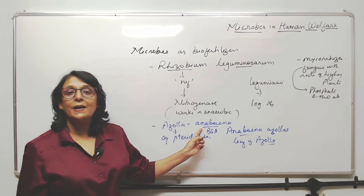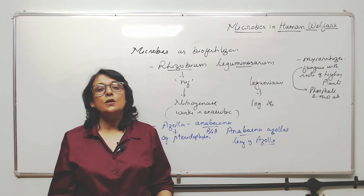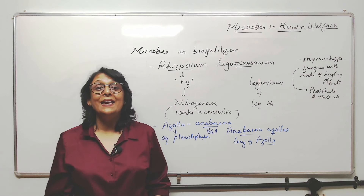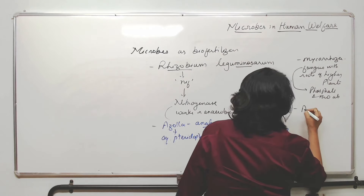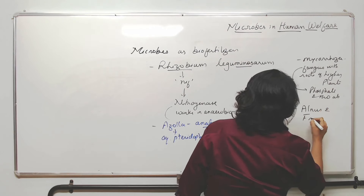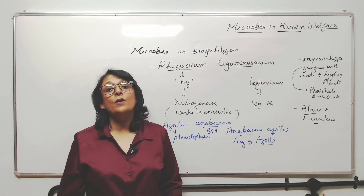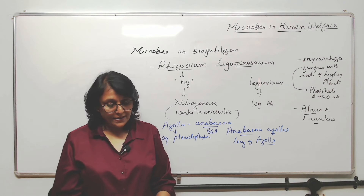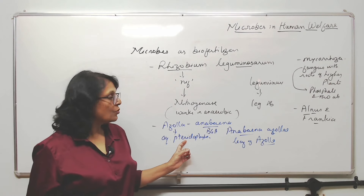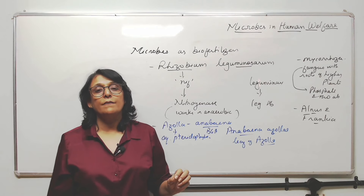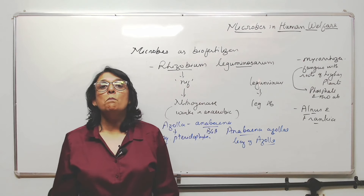Azospirillum and azotobacter are free-living nitrogen fixers, while rhizobium is symbiotic. If you add these microbes into the soil, the nitrogen and mineral content of the soil will increase. There is also Frankia and Alnus — a symbiotic association in the root nodules of Alnus — along with Anabaena azollae, which are common microbes that help increase soil fertility and can be used as biofertilizers.